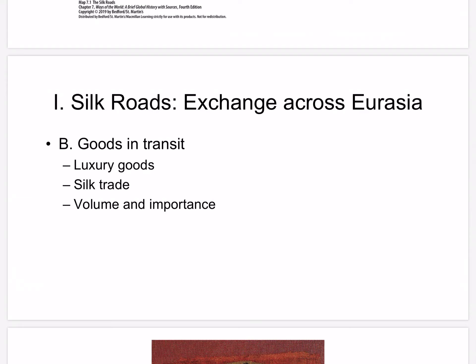A vast array of goods traveled along the Silk Roads, often by camel — mostly luxury goods for the elite, as the high cost of transport did not allow for the movement of staple goods. Silk symbolized the Eurasian exchange system, hence the term Silk Roads. At first, China had a monopoly on silk technology, but by the 6th century CE other peoples produced silk. Silk was used as currency in Central Asia and was a symbol of high status, only developing in Western Europe in the 12th century.